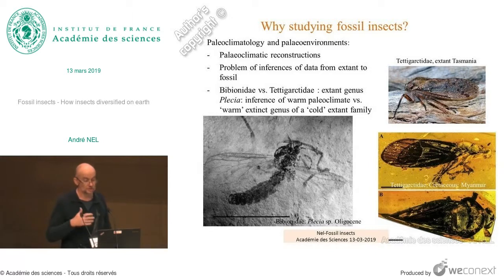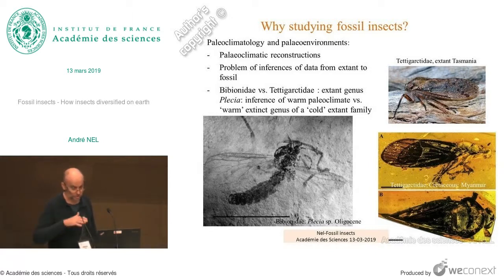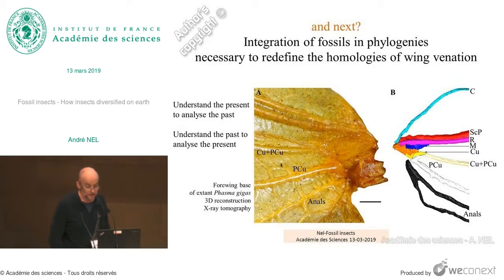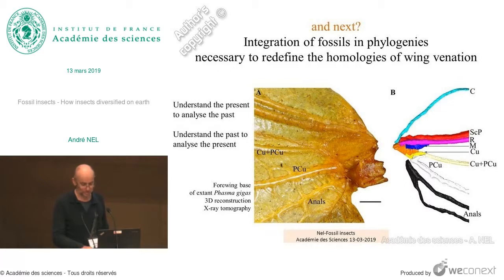To conclude, we need to integrate fossils into phylogeny, and to do this we need to establish homologies of wing venation. Fossil insects are very important for phylogeny — for instance, an analysis showing that Pernopsocida, a new order we described some years ago, was the sister group of Hemiptera and Thysanoptera — the bugs — and we could see an intermediate stage of mouthpart evolution. To elucidate important evolutionary steps, it is very useful to have fossils.